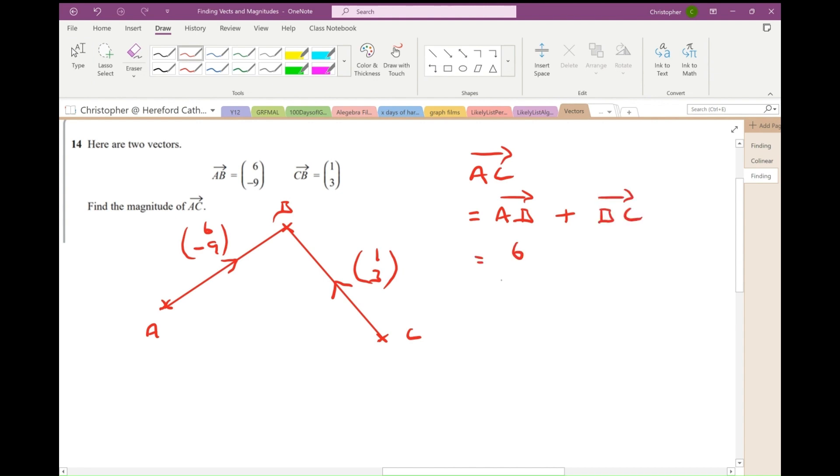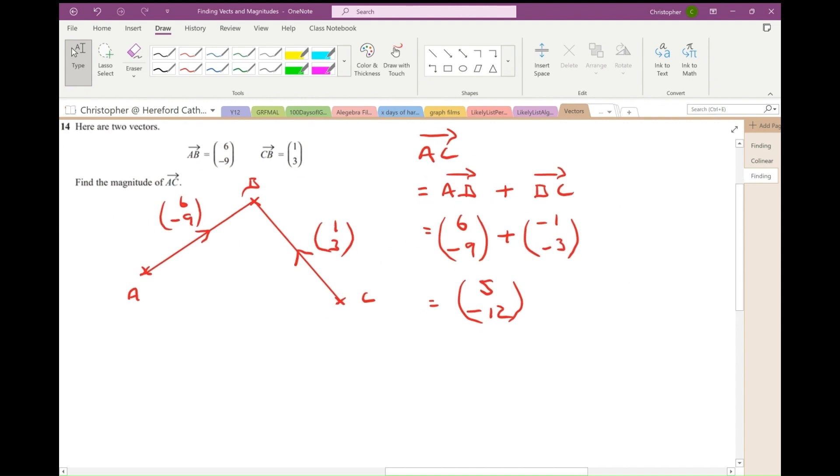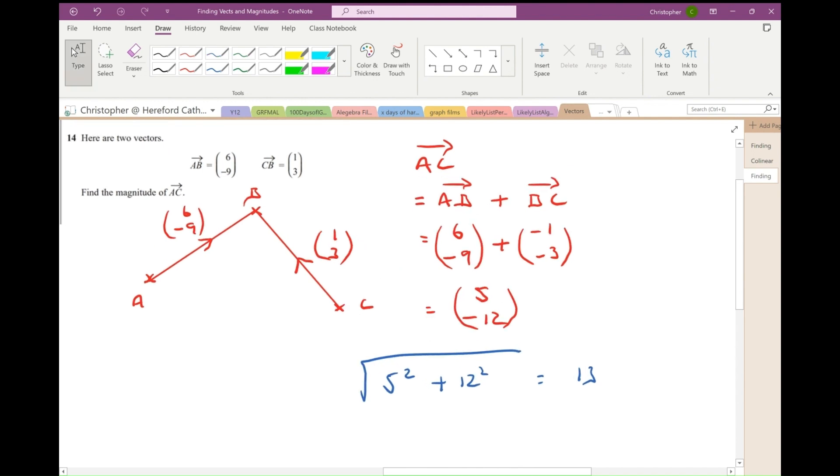Well, AB is (6, -9). And B to C is the opposite of CB. So it must be (-1, -3). Okay, so that's going to give me a vector AC of (5, -12). Now, of course, the question wasn't find the vector AC, but it was find its magnitude. So the magnitude of that is going to be the square root of 5 squared plus 12 squared. And if you recognize your Pythagorean triples, you'll already know the answer is 13. Or if you put it in your calculator, you'll work out that the magnitude of AC is 13.